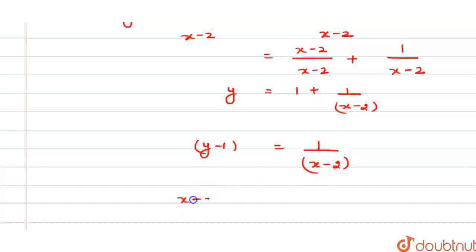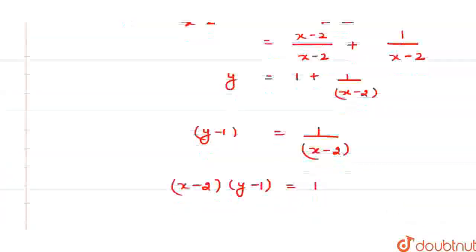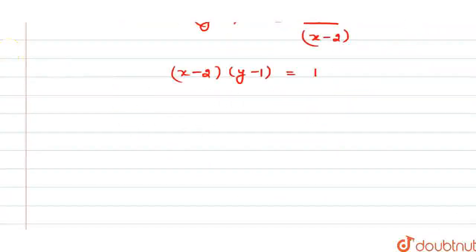And this is (x-2) into (y-1) equals 1. Now, if we call this as X and this as Y, this will be X into Y equals 1, where my capital X is small x minus 2 and my capital Y is small y minus 1.